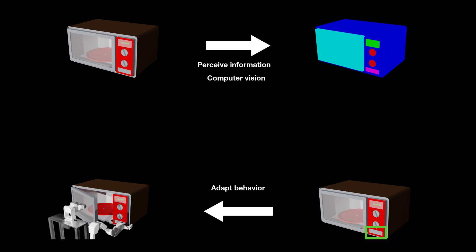In computer vision, we have been primarily focusing on the perception problem. We developed algorithms to recognize objects and analyze things. On the other hand, robot control focuses on correctly executed planned actions, and we are able to achieve quite high precision with control methods. Now we have those two modules ready — why are we not seeing robots doing things everywhere? Well, there is actually a gap between these two lines of research.